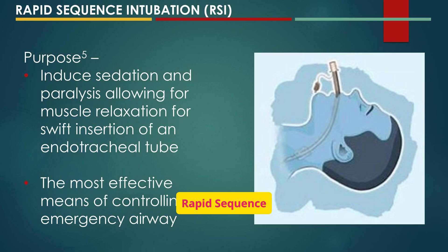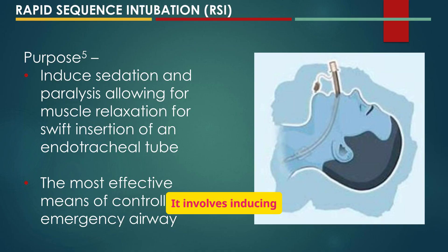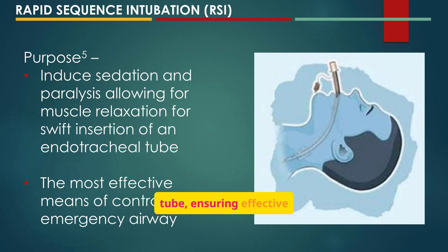Rapid sequence intubation, or RSI, is a critical procedure for emergency airway management. It involves inducing sedation and paralysis to facilitate the swift insertion of an endotracheal tube, ensuring effective ventilation.